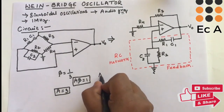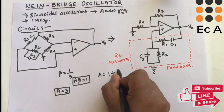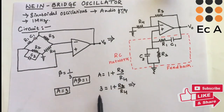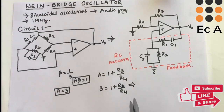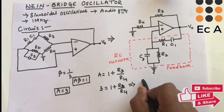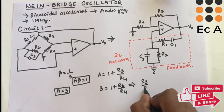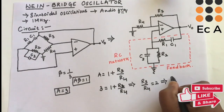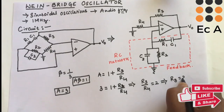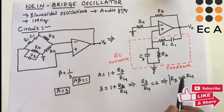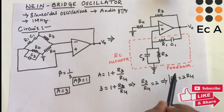This circuit is similar to a non-inverting amplifier. The gain of a non-inverting amplifier is A = 1 + R3/R4. Substituting A = 3, we get R3/R4 = 2, which means R3 = 2·R4. We need to choose resistor R3 to be twice that of resistor R4 to get sustained oscillation.